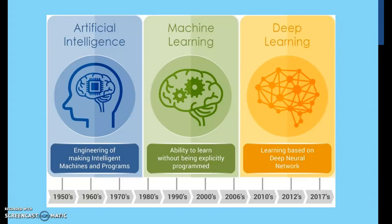Artificial intelligence is the engineering of making intelligent machines and programs. In machine learning, we have the ability to learn without being explicitly programmed — the machine learns from data. Deep learning is learning based on deep neural networks. When there is complex data, you solve and break that complex data down using the neural network.